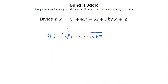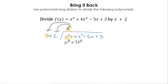We're going to put x plus 2 on the outside and ask what times x gives me x to the third. That's x squared. x squared times everything on the outside gives me x cubed plus 2x squared. Now I'm going to change my sign, draw my line, subtract — x to the third minus x to the third cancels, and 4 minus 2 gives me 2x squared. Bring down the next term.